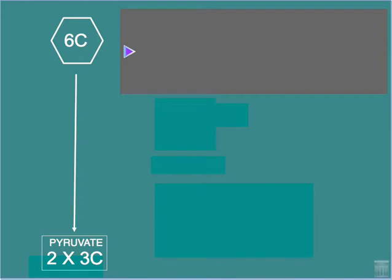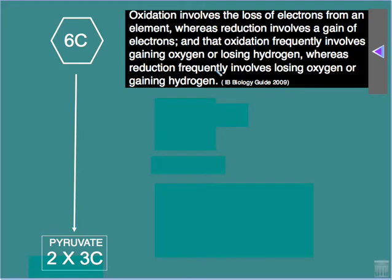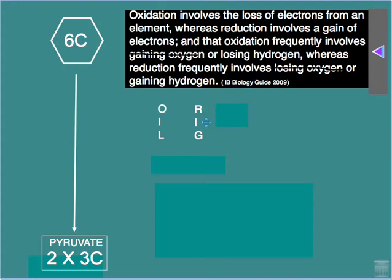One key event that must occur in glycolysis is oxidation. For the purpose of biology, it is useful to think of oxidation as simply the loss of electrons, whereas reduction is the gain of electrons. Or, to think of oxidation as the loss of hydrogen, whereas reduction involves the gain of hydrogen. If we simply remember OIL RIG — oxidation is the loss of electrons or hydrogen, and reduction is the gain of electrons or hydrogen — then we have a simple understanding of oxidation and reduction.